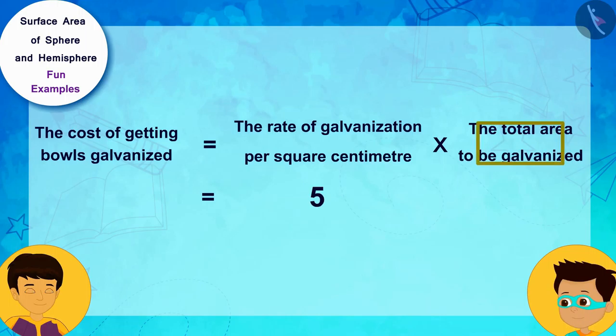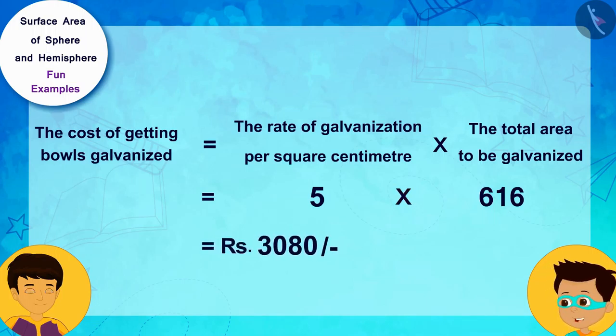by total surface area to be galvanized, 616. Look, Manas! It will take a total of 3,080 rupees to get the galvanization done.